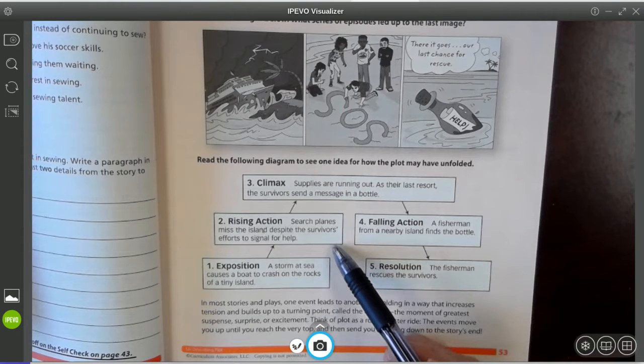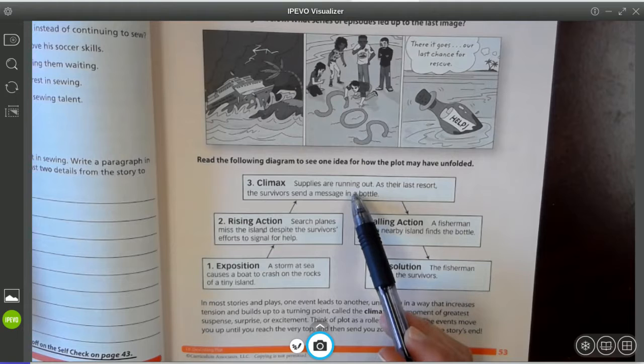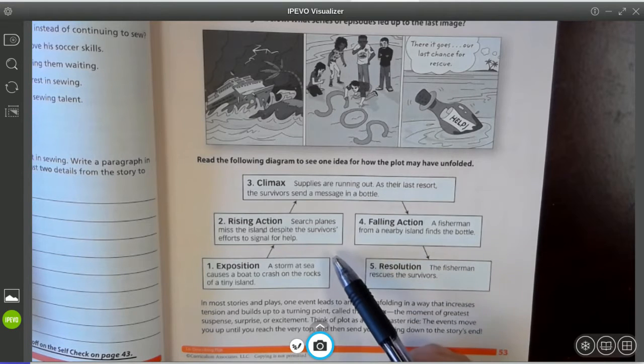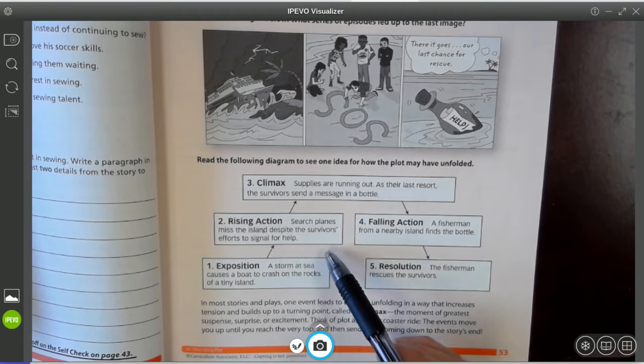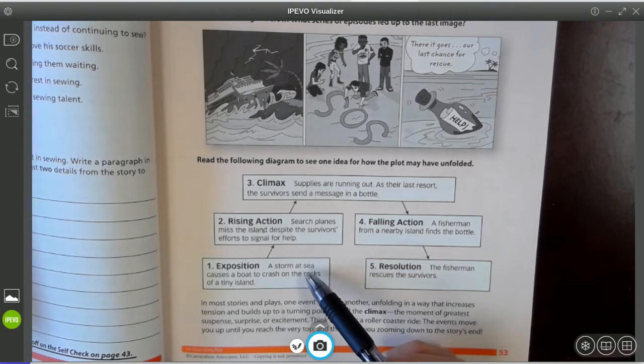And then we have the rising action. It's the events in which a conflict is introduced and problems increase leading to the climax or the turning point in the story. So in this particular story, search planes miss the island despite the survivors efforts to signal for help.